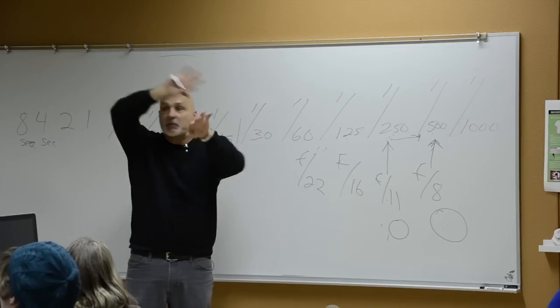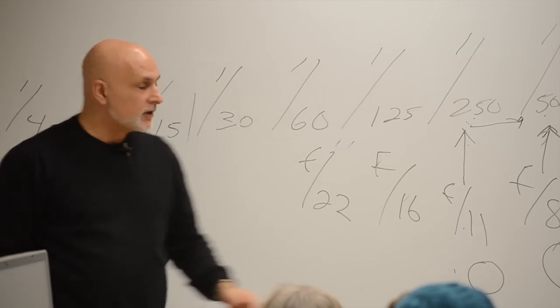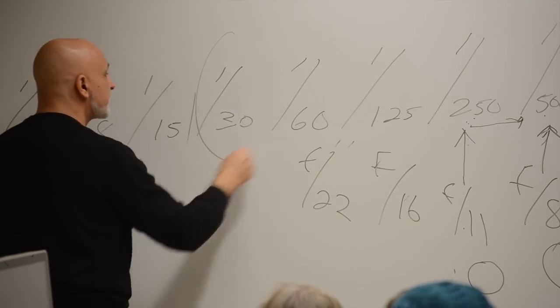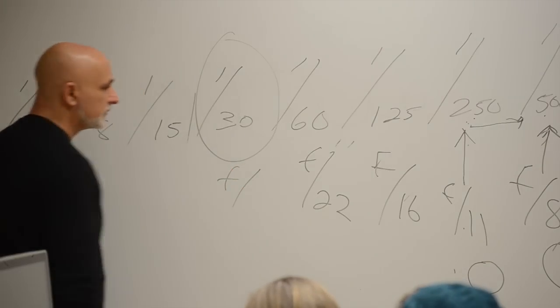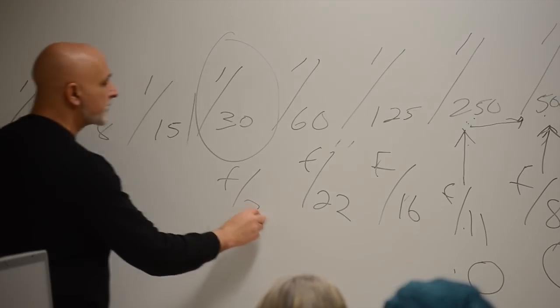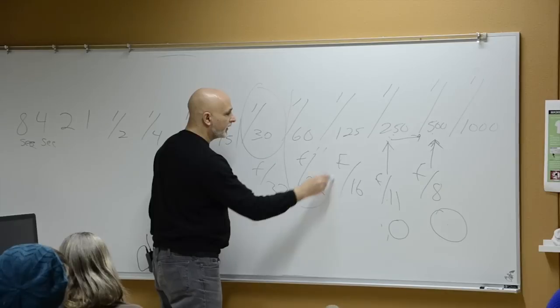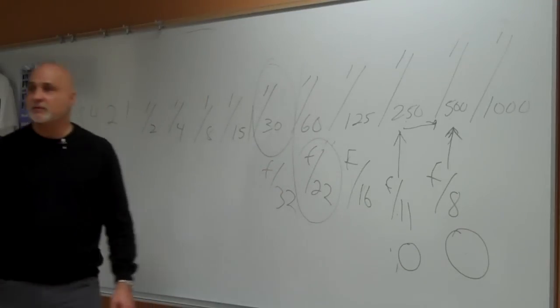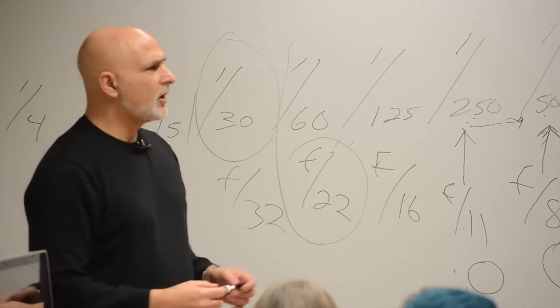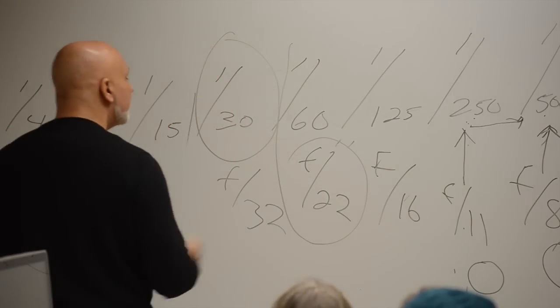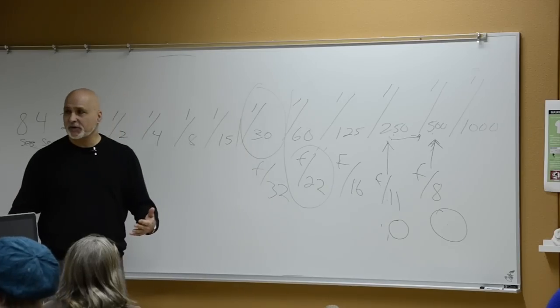So I've decided I want to use a 30th of a second. So what f-stop are you supposed to use? 32. But guess what? Your camera doesn't have that. Your camera only goes this far. So now what are you going to do? No, go home. Call it a day.